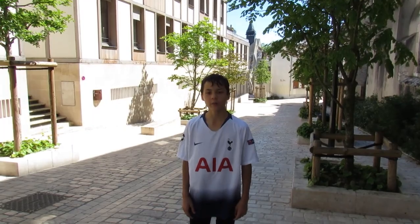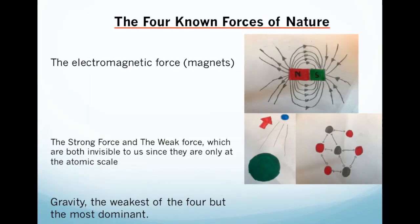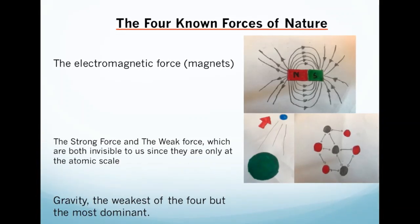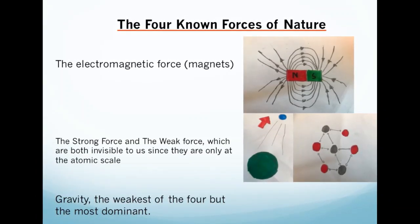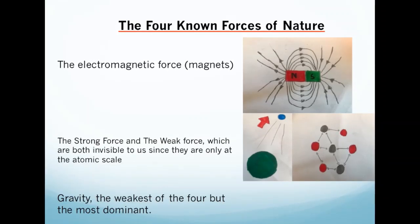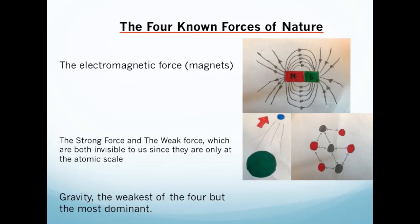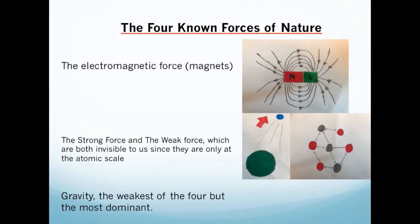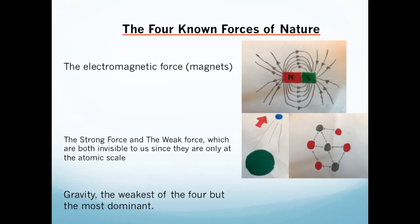A lot has happened since Newton and Cavendish. Scientists now think that there are four known forces of nature: one, the electromagnetic force, otherwise known as magnets; two, two forces that operate at the atomic level, called the strong force and the weak force; and finally, gravity — the weakest of the four known forces of nature, but considered the most dominant because it can hold galaxies together.